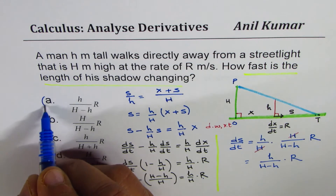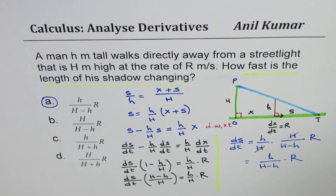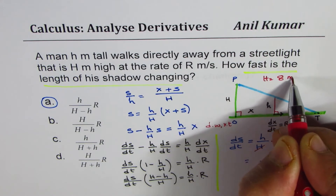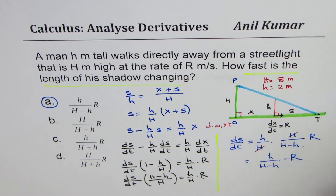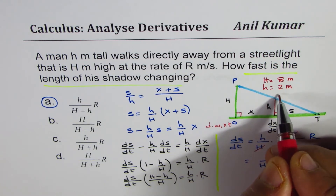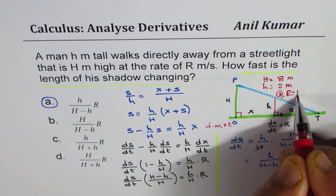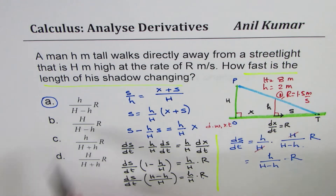That is how you solve the question in general. If specific values are given — for example, height of the pole is 8 meters, height of the person is 2 meters, and rate r is 1.5 meters per second — you can substitute these values to find the numerical answer.